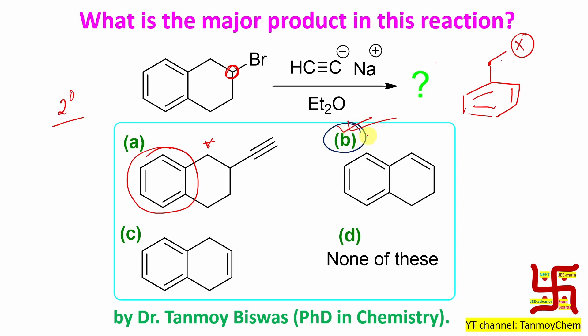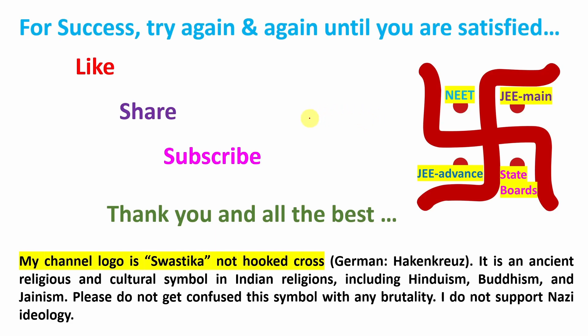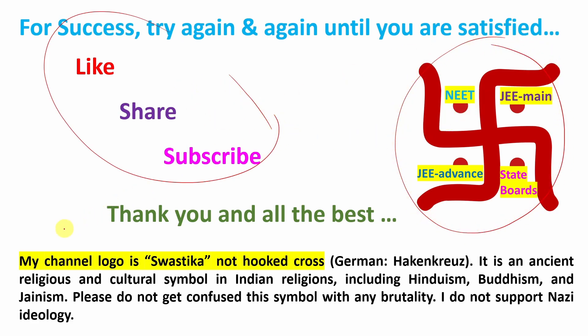So overall, everything indicates that the conjugated alkene will be the major product. In some cases you need gut feeling, but before relying on gut feeling, read as much as you can and practice as much as you can — that will give you more assurance to get the correct answer. Study is more important. I believe you have learned a lot. If you consider the content of my channel worthy, please help this channel grow. See you in my next video.